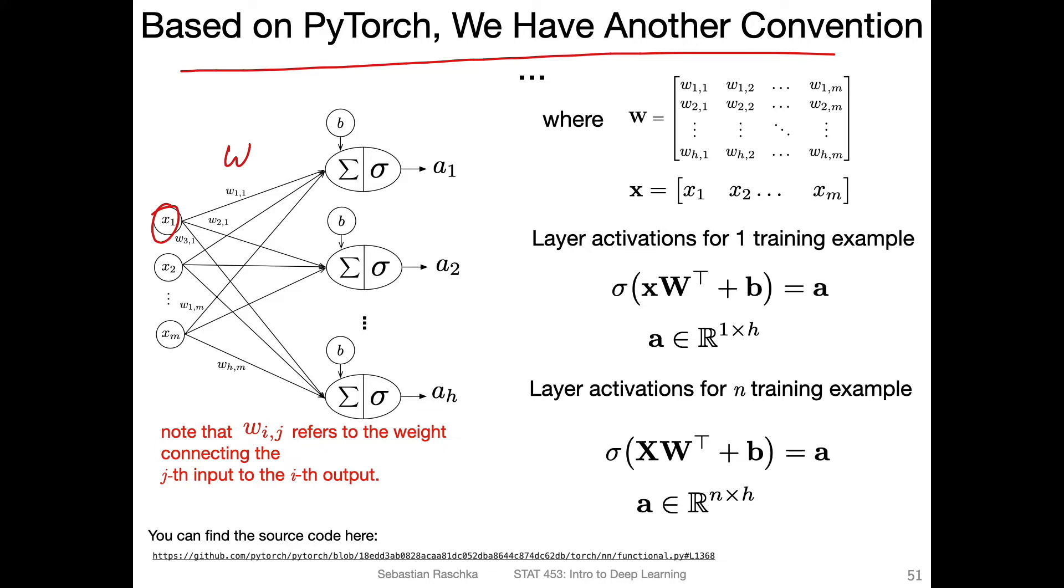If we have an input with one training example, like this x here, this vector, then we can use the notation where x is in front. If we transpose w, then the dimensions will match. In this case, it's a 1 times m dimensional vector, where w is an m times h dimensional vector. The result will be then 1 times h dimensional vector.